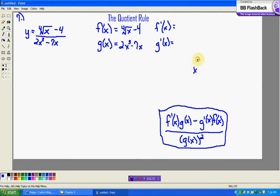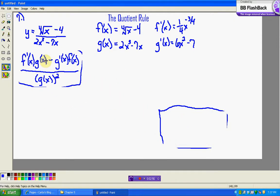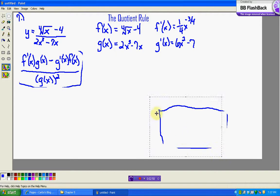x to the negative, or x to the, the fourth root of x is the same as writing x to the one-fourth. So, when we take our derivative, we get one-fourth x to the negative three-fourths. So, I'm going to use that, one-fourth x to the negative three-fourths. I take the derivative here, we get 6x squared minus 7. I'm going to do some cleaning up here. I'm going to take, move it right here.